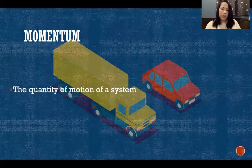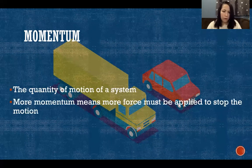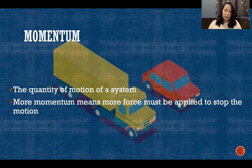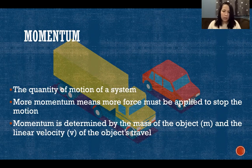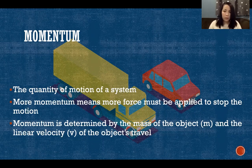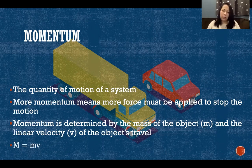Momentum is the quantity of motion of a system. More momentum means more force must be applied to stop that motion. Momentum is determined by the mass of the object and its linear velocity — that is, speed and direction. We calculate momentum simply by multiplying mass times velocity.